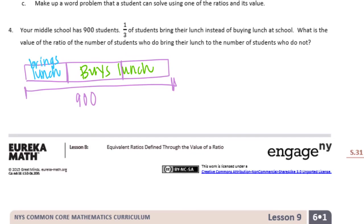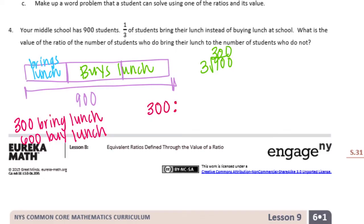So if we want to break this apart, we could see, take the 900 and split it into three equal parts. We're going to get 300. So each piece is equal to 300. So there are 300 bring lunch. And then 300 and 300 would be 600 buy lunch. And it wants to know what's the value of the ratio of the number of students who do bring lunch to the number of students who do not. So that number 300 to 600. If we want to find the value of that 300 over 600, we can reduce that by dividing by 300. Because they can both be divided into 300. And we'll get 1 to 2. So the value is 1 over 2, 1 half.